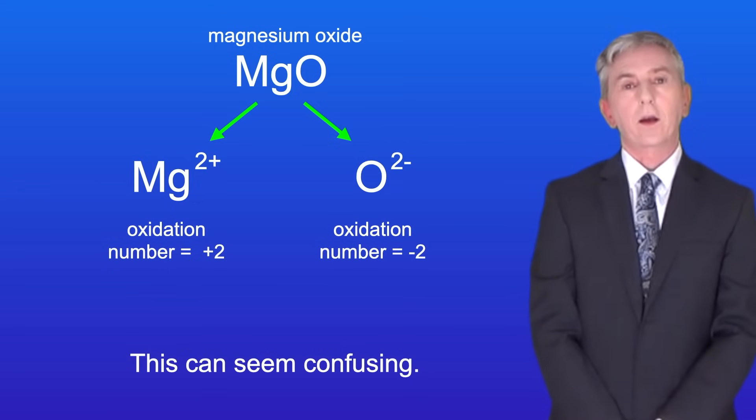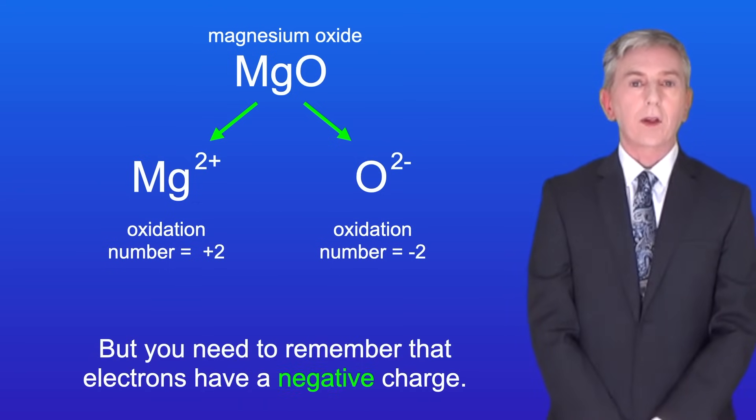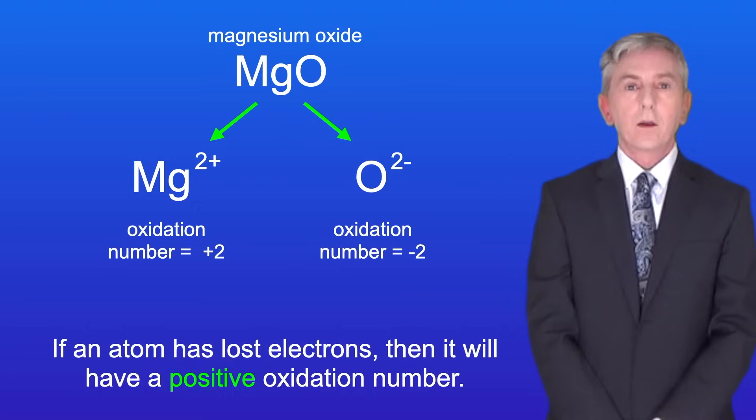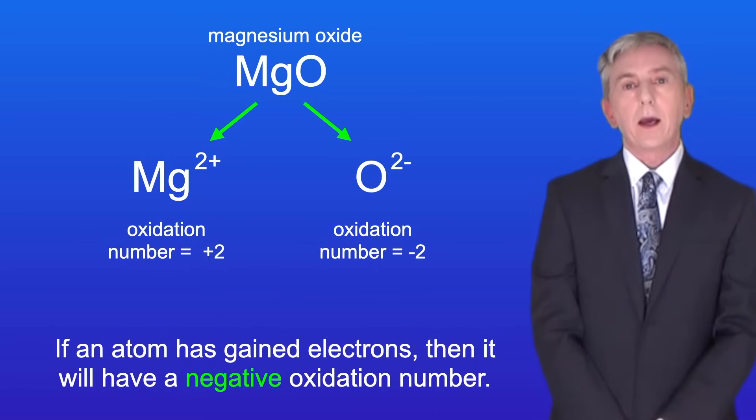Now this can seem confusing, but you need to remember that electrons have a negative charge. So if an atom has lost electrons, then it will have a positive oxidation number. And if an atom has gained electrons, then it will have a negative oxidation number.